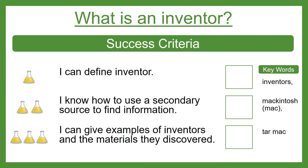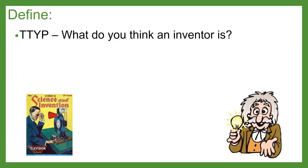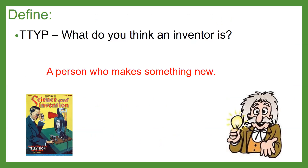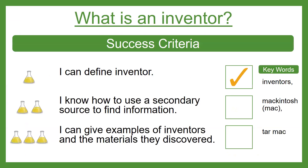Inventors. Macintosh. Tarmac. You might know some of these words already. Think about what an inventor is — perhaps tell an adult or a sibling in your house. What does the word inventor mean? What does that person do? There are some clues in the images on the screen. Hopefully you've had a think — an inventor is a person who makes something new. That word 'invent' means to create, to build, to make something new. So we've already covered one of our success criteria: defining an inventor.